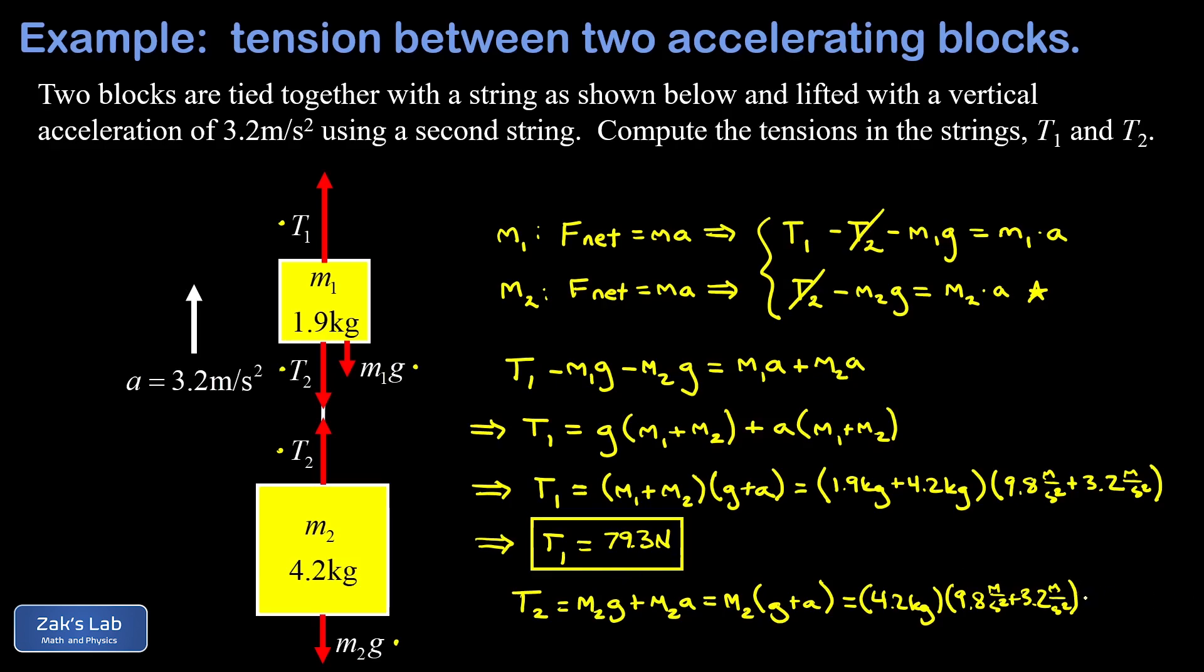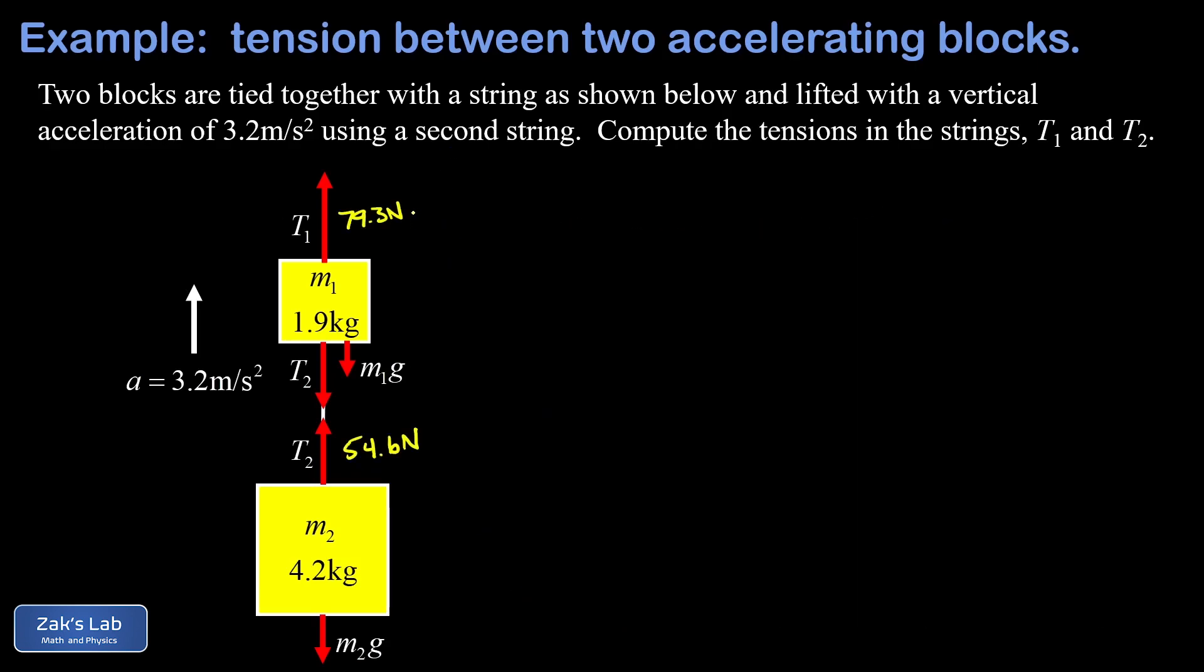We solved the problem, but I want to show one way that we could check our work. We have 79.3 for T1 and 54.6 newtons for T2. One way to check our work is to analyze the net force on one of these masses. I'm going to choose m1, then figure out what the acceleration is and make sure it turns out to be 3.2.